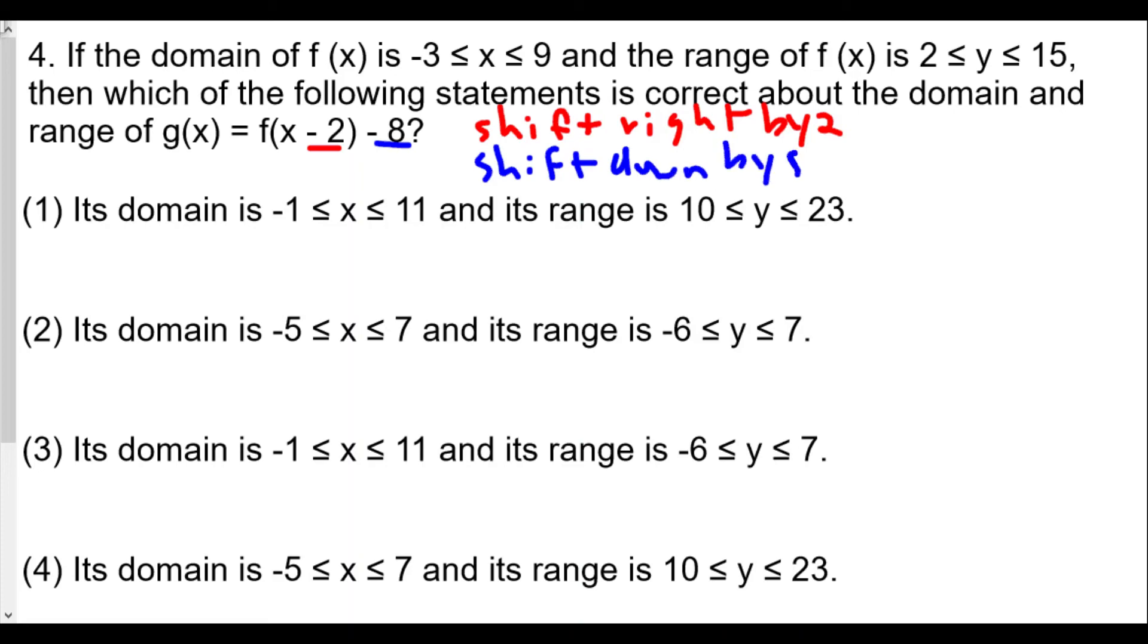Our original domain is -3 ≤ x ≤ 9. If we shift right by 2, that means we're going to add 2 to the x values.